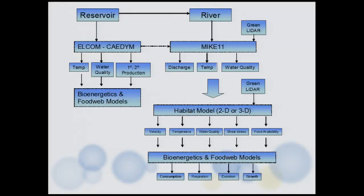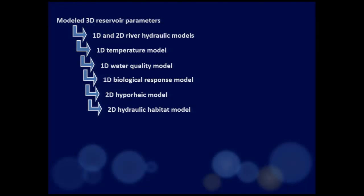Here is the diagram we used. Reservoir data fed into ELCOM — the 3D reservoir model — and then that information was fed into the river system studied in 1D to get discharge, temperature, and water quality in the longitudinal direction. Then we used a 2D model to calculate local velocity and shear stresses for the biological energetic model. We also looked at the subsurface using a hyporheic model, since surface water flows into the interstices — especially during spawning season — making it important to know water flux, oxygen, and temperature in the streambed.